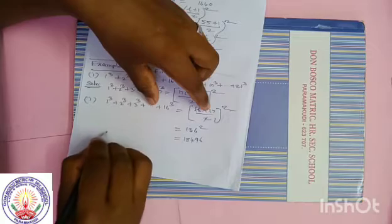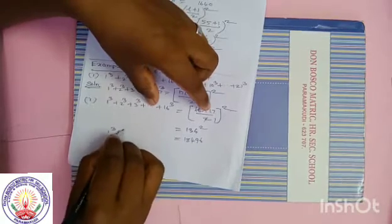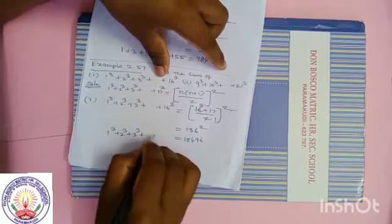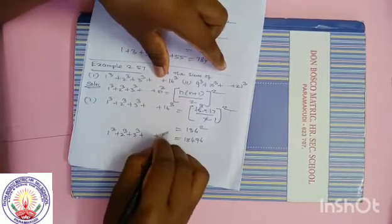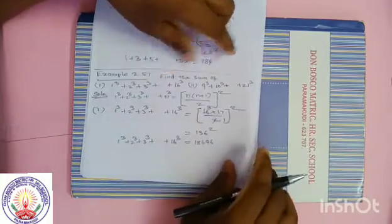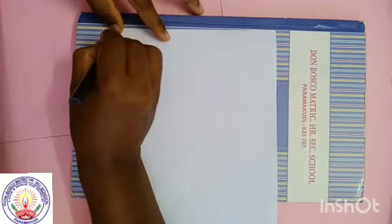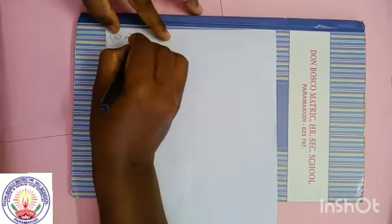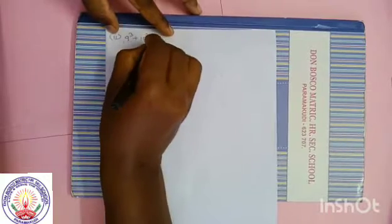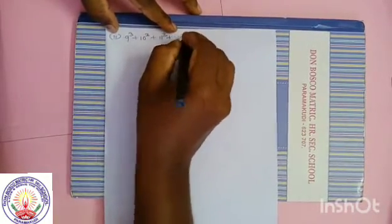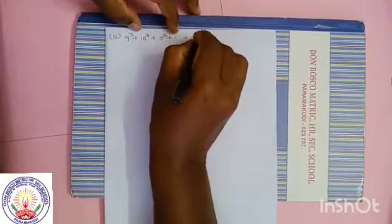1 cube plus 2 cube plus 3 cube plus dot dot dot plus 16 cube is equal to 18,496. Problem number 1 solved. Now problem number 2 — it will be a 5-mark question. 9 cube plus 10 cube plus 11 cube plus dot dot dot plus 21 cube.